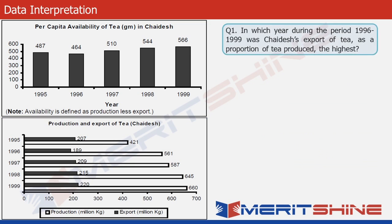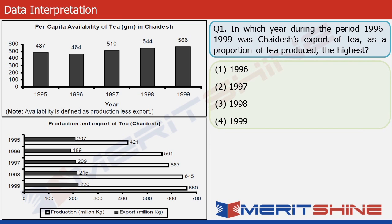Question 1 asks us to find the year in which the export of tea from Chayadesh as a percentage of the tea produced is the highest. We look at the second graph. For 1996, production is 561 and export is 189, so export as a percentage of production is 189 divided by 561. We need to calculate this ratio for all four years and find which is the highest.